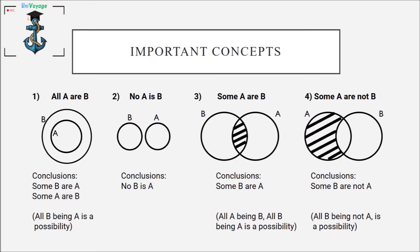The first case is 'all A are B.' Here the conclusions are 'some B are A' and 'some A are B.' We also consider a possibility case: all B being A is a possibility.